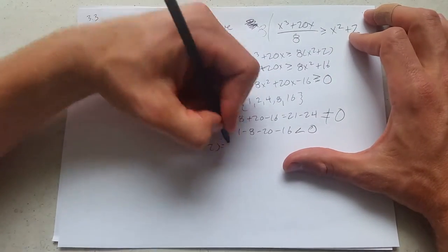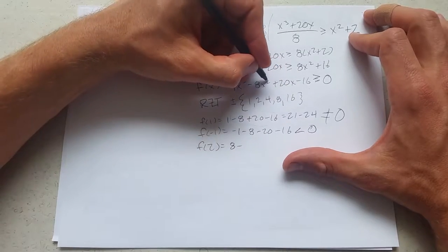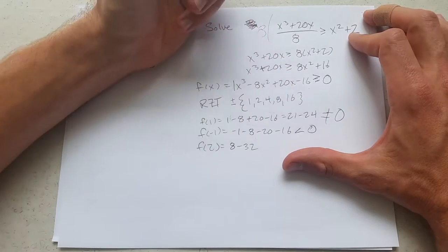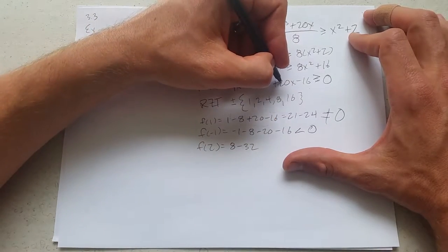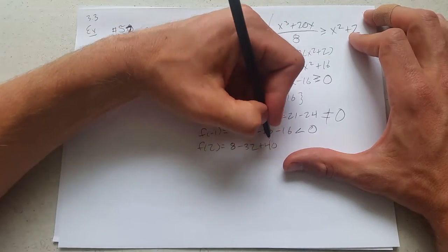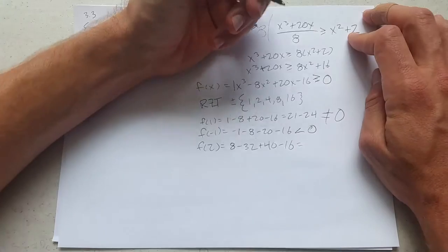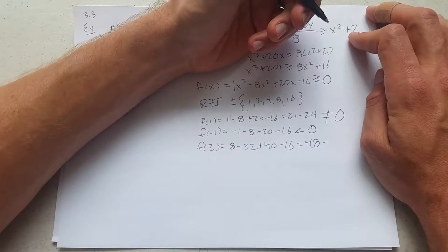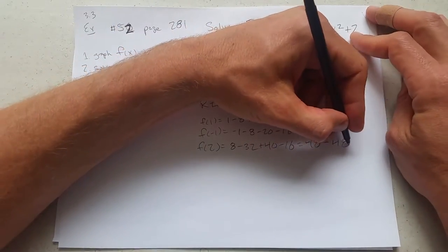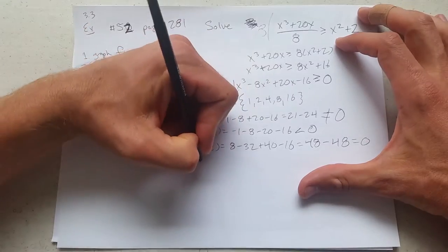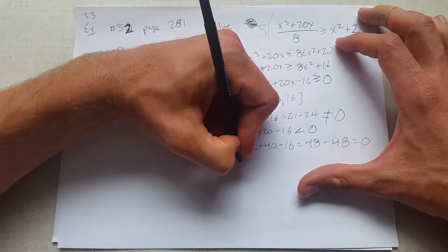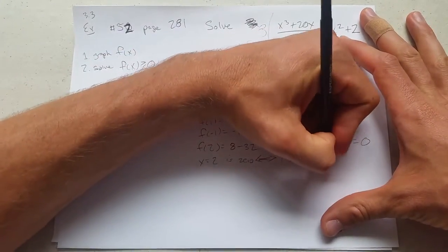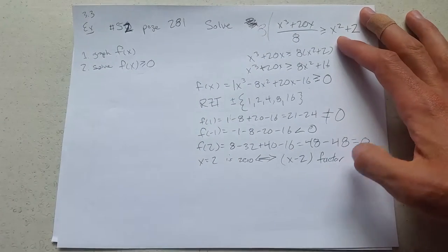Trying 2 now. 2 cubed is 8. Minus 8 times 4, 32. Hopefully, 20 times 2 plus 40 minus 16. We have 48. We have 48 minus 48. There we go. And we get 0. x equals 2 is a 0. Corresponds to which factor? x minus 2. We got a factor.